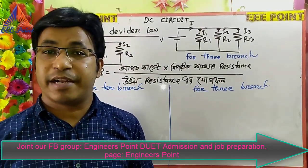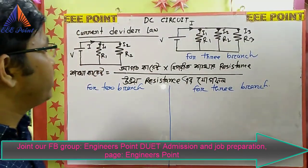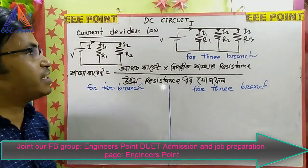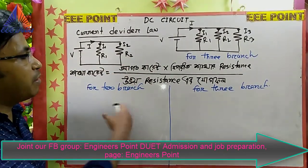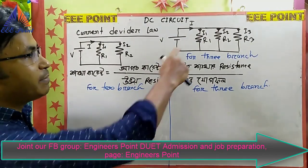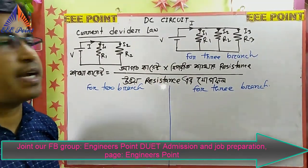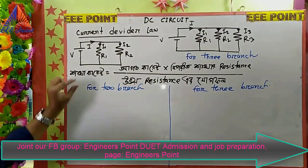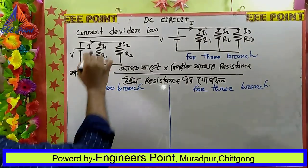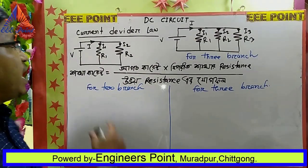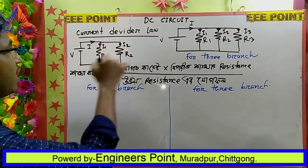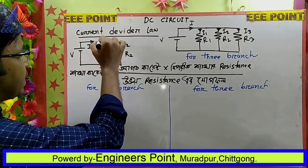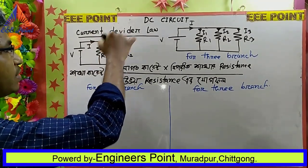If you have a current divider law here, please select the current divider law. When the current divider law is applied, you can use the current divider law. You can see that the labels are i1 and i2.